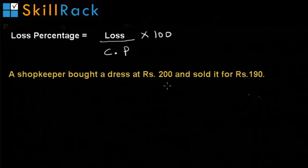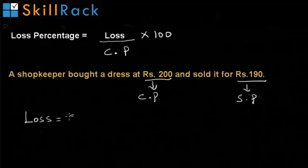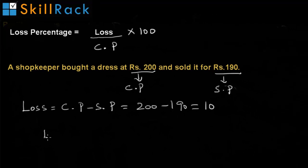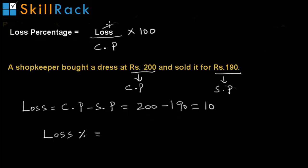Let us look at this example. The cost price is Rs. 200 and the selling price is Rs. 190. Because the selling price is less than the cost price, it is a loss. Loss is calculated by the formula cost price minus selling price. So, loss is Rs. 200 minus Rs. 190, equal to Rs. 10. Using the formula, loss percentage equals loss divided by cost price multiplied by 100: that is 10 divided by 200, multiplied by 100. So, the loss percentage is 5%.